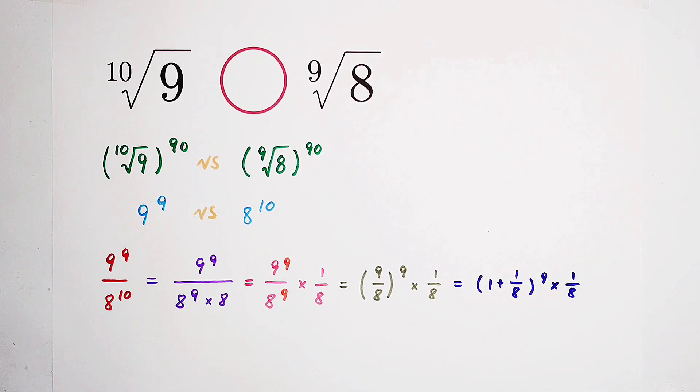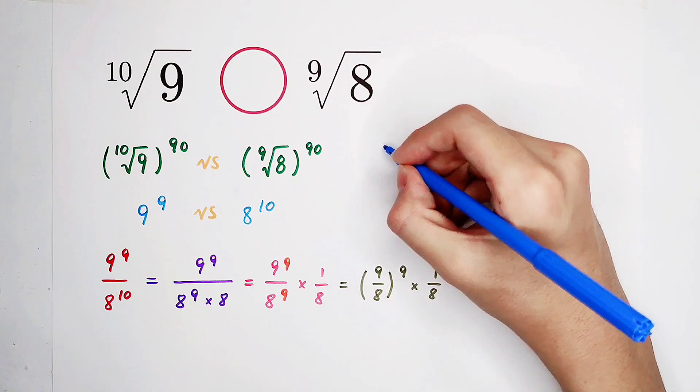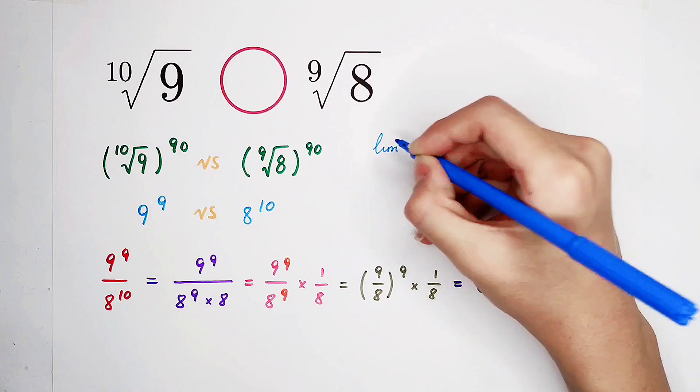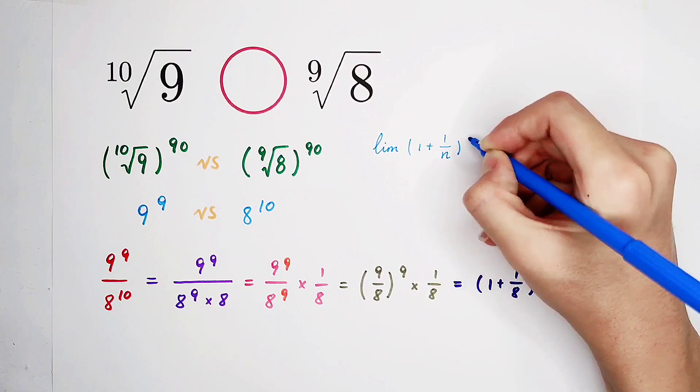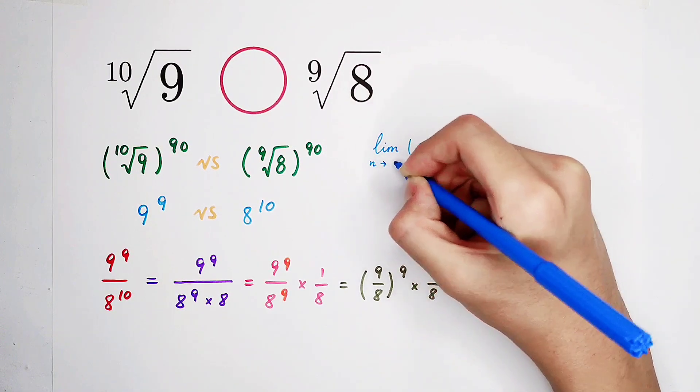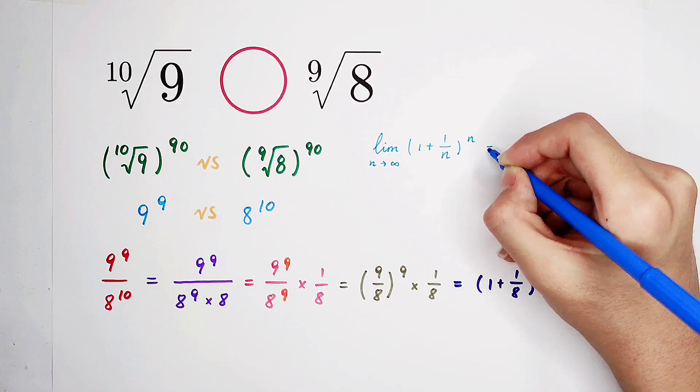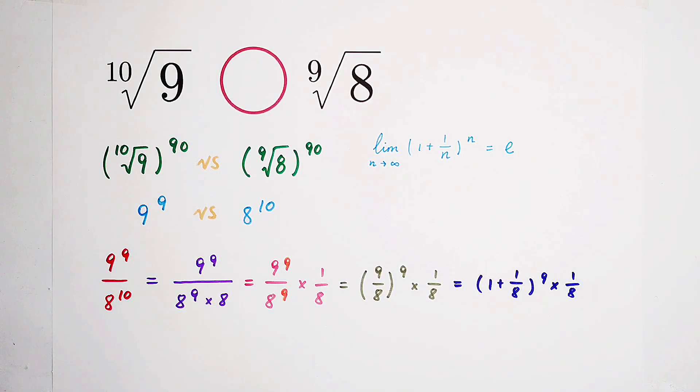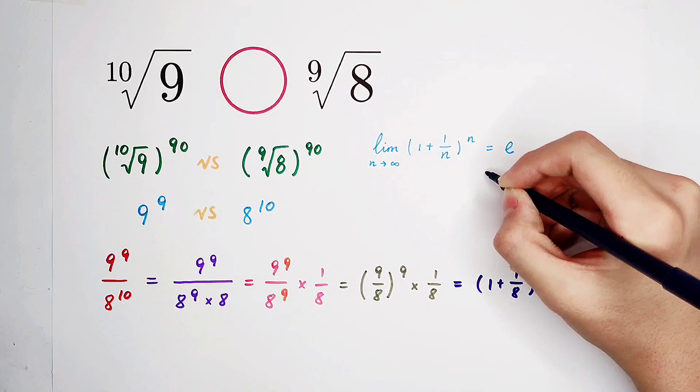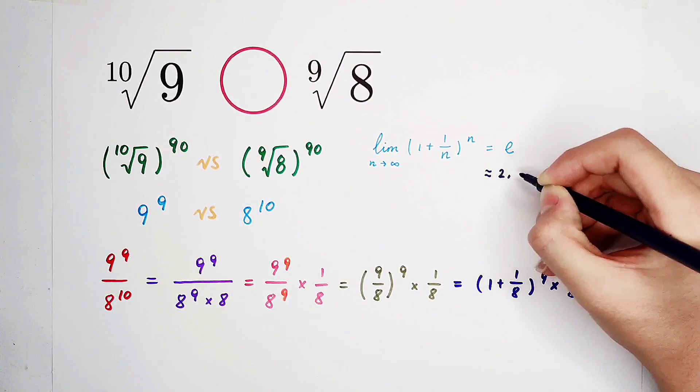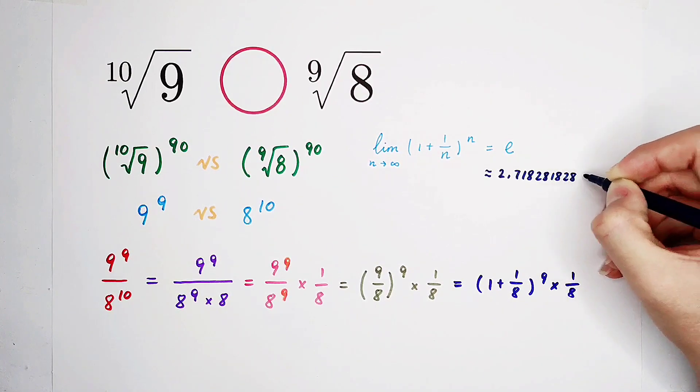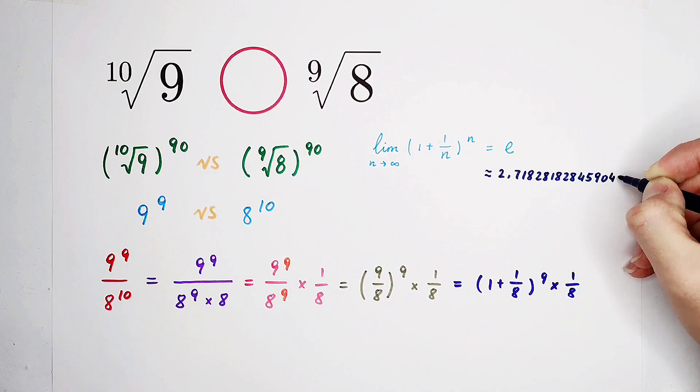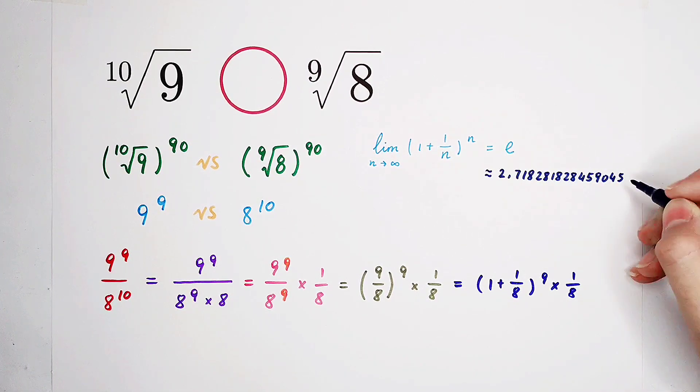So, we don't like this exponent 9 at all. What shall I do? We know that the limit of 1 plus 1 over n, all to the power of n, n tends to infinity, the result is e. And e is approximately equal to 2.718281828459045.